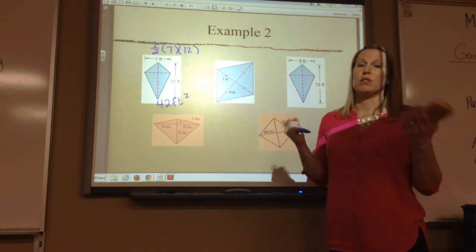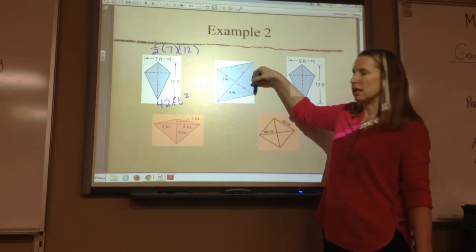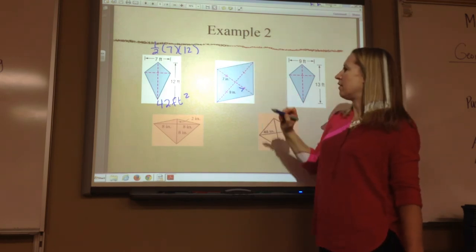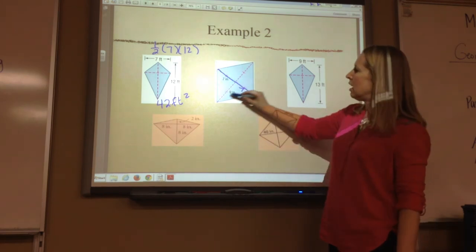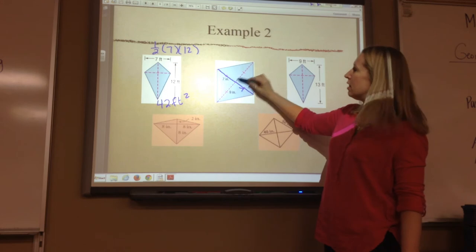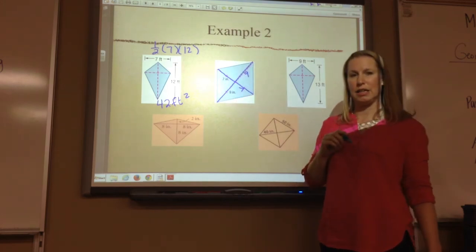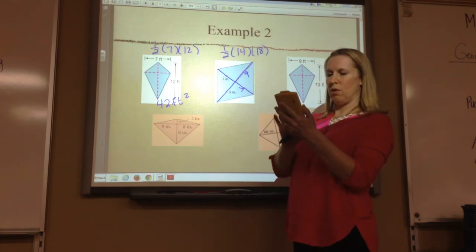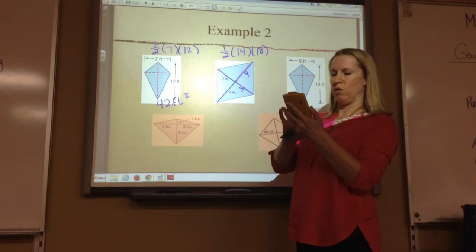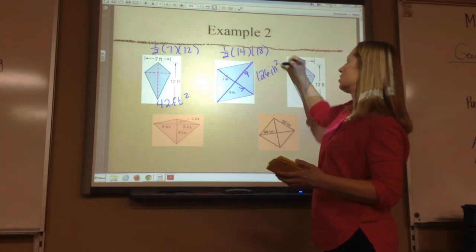Okay, this is a rhombus. Diagonals bisect each other — so if you know this is seven, this length would also be seven, making that entire diagonal fourteen. If this is nine, this would be nine, making that entire diagonal eighteen. So I would do one-half fourteen times eighteen, and I got a hundred and twenty-six inches squared.